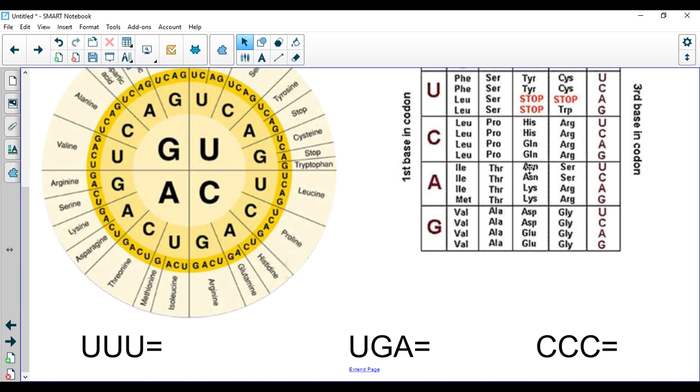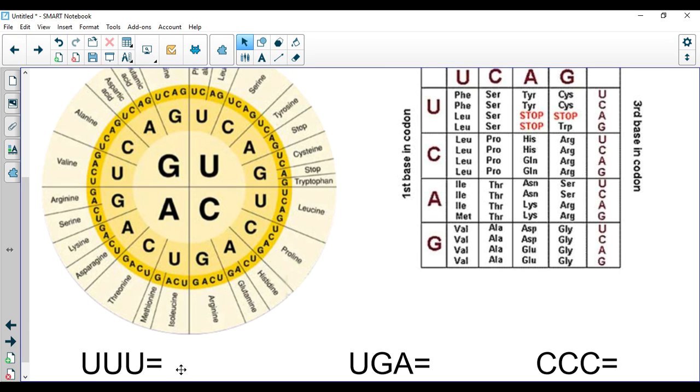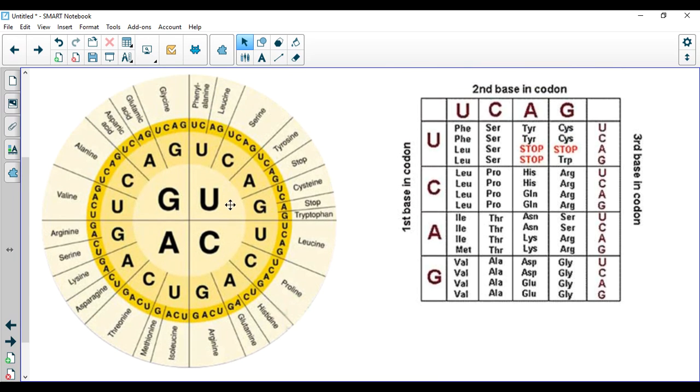I've got three down here to practice. The first one, UUU. So I'll use the circle one, U, U, U. This is actually one of my favorite amino acids, U, U, U. That is phenylalanine, P-H-E over here. Phenylalanine. There's actually a disorder called PKU that is a deficiency in the body for breaking down phenylalanine.